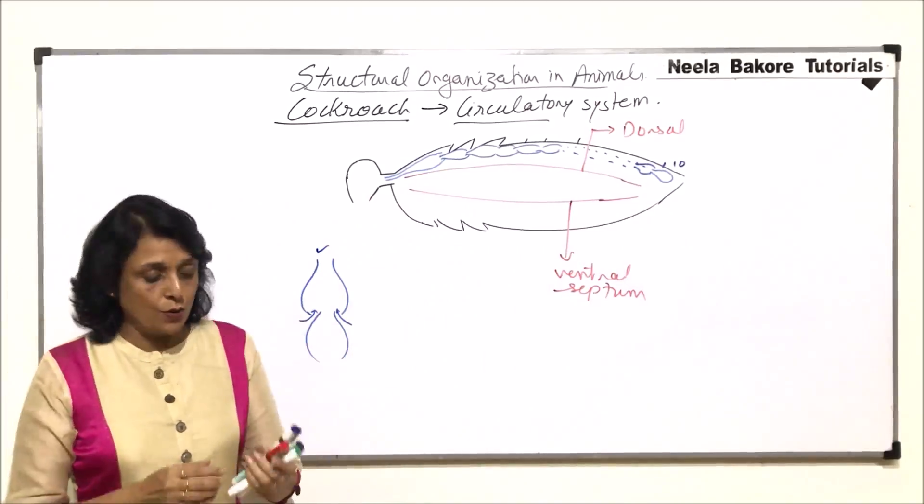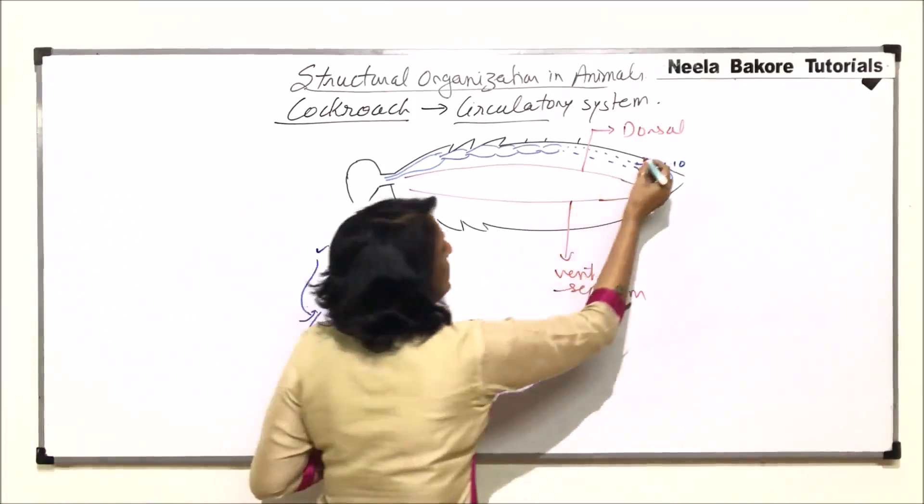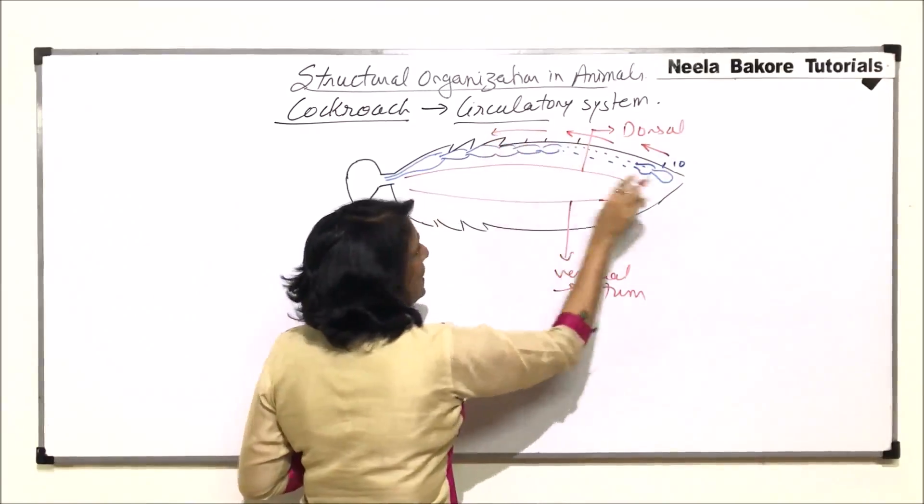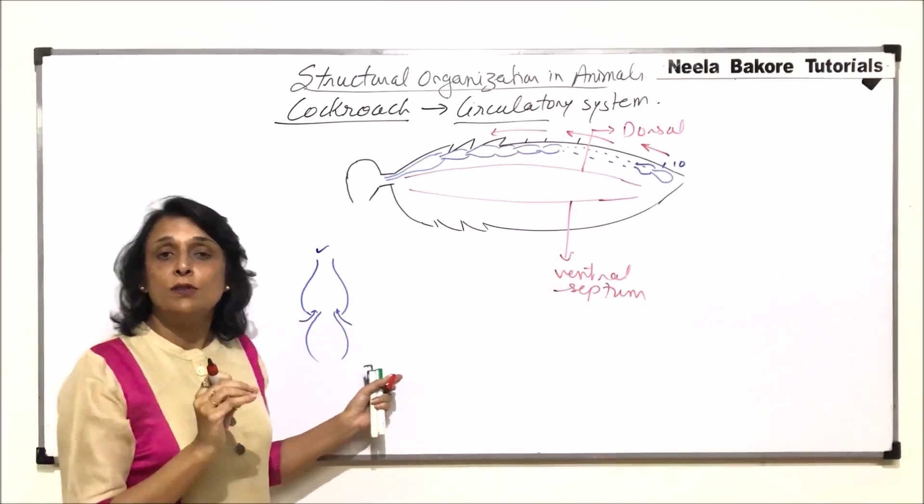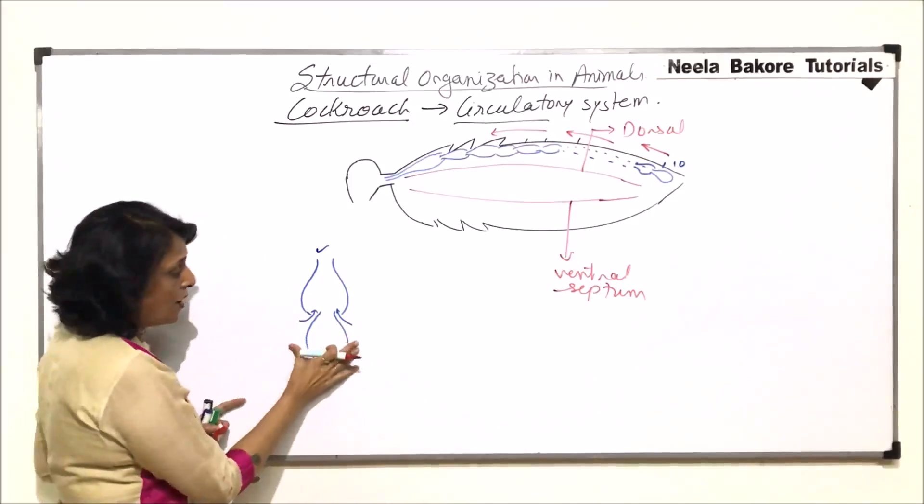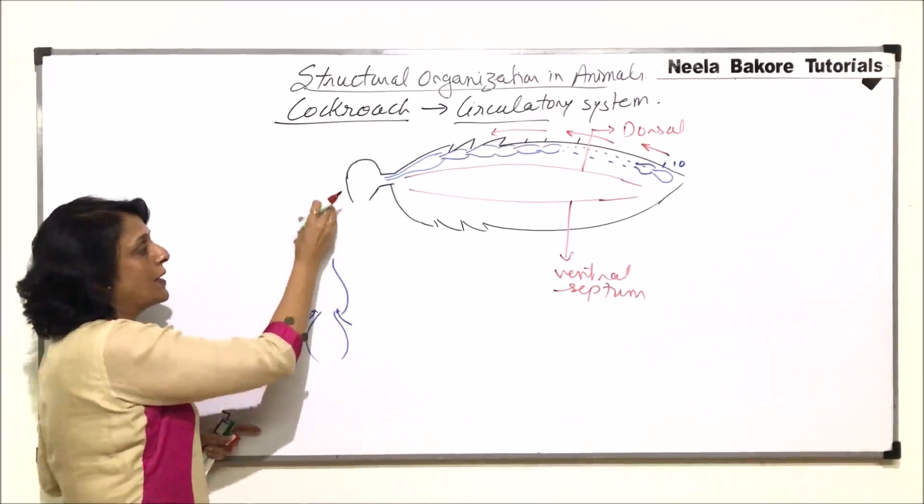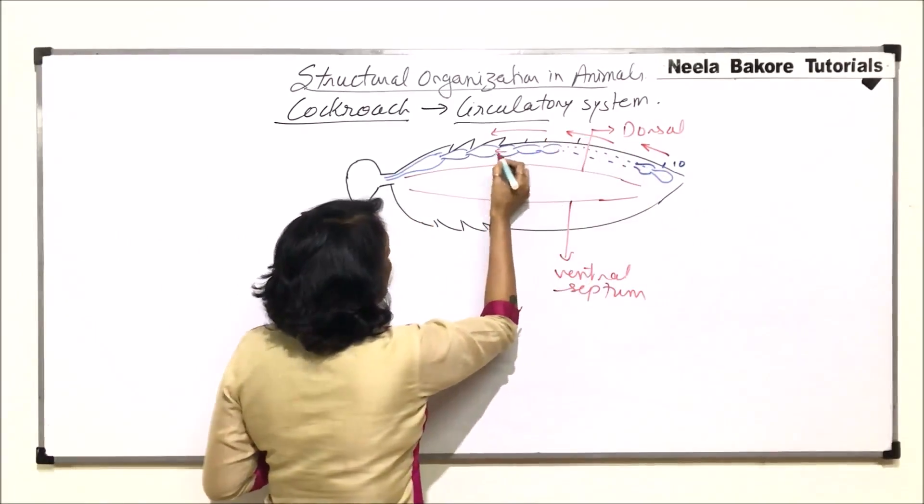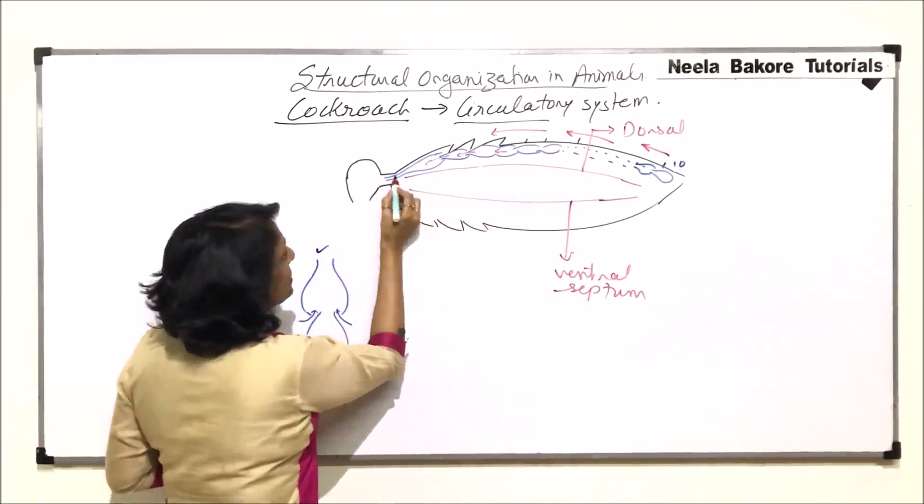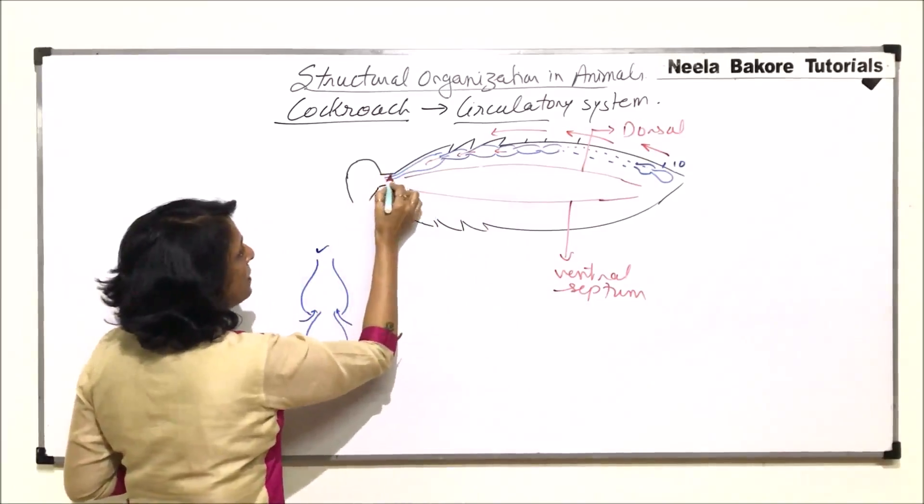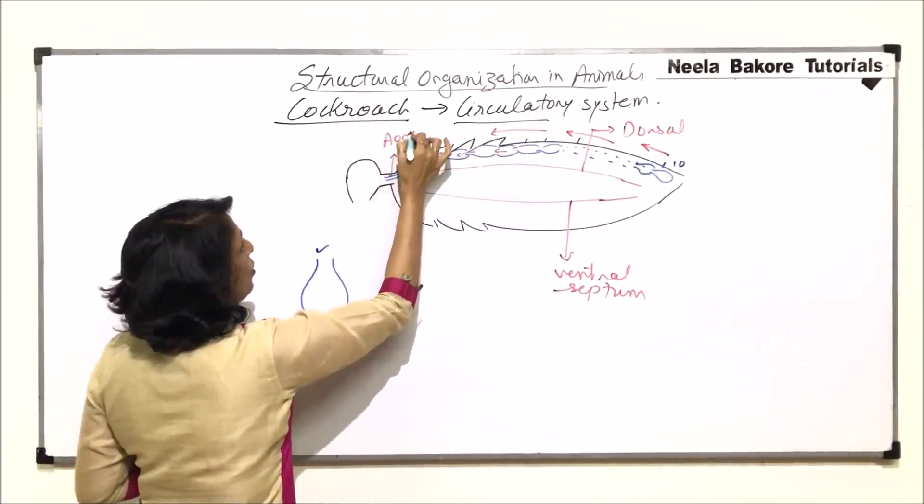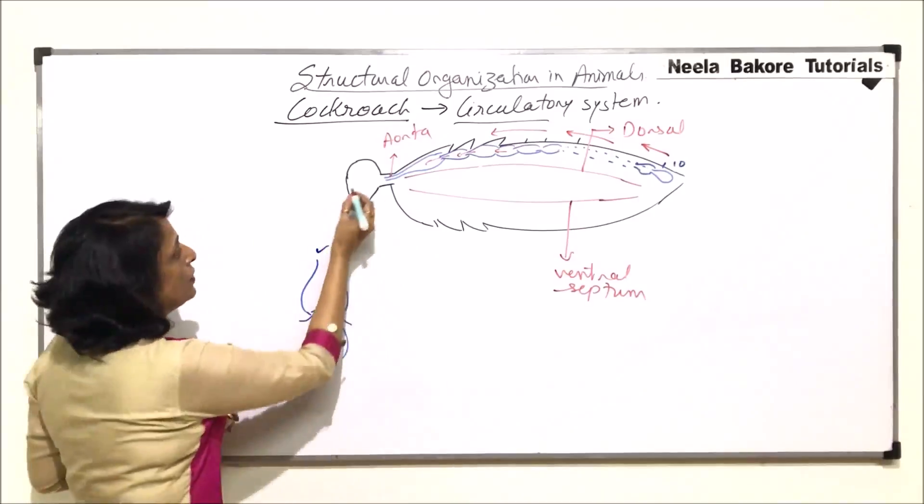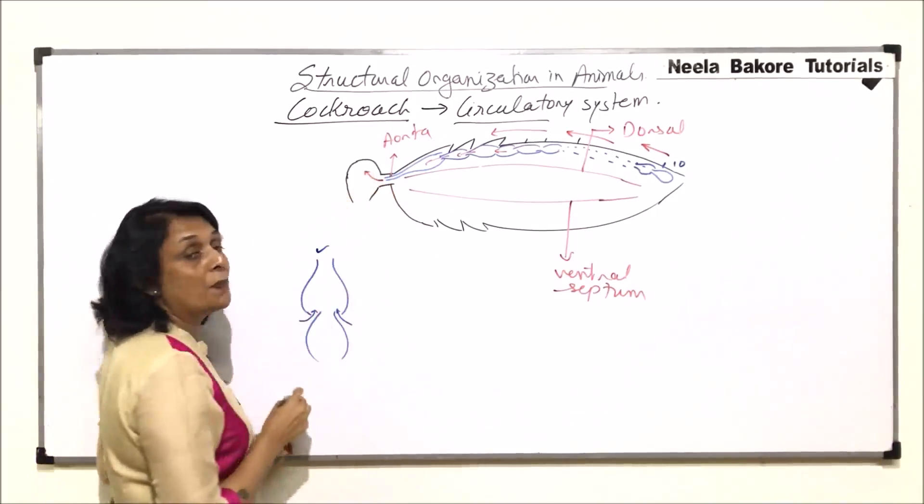Now how is the blood going to flow in this heart? The contraction is postero-anterior. That means first the posterior, the 10th chamber is going to contract. When this contracts, the blood will come into the 9th, when 9th contracts into 8th and so on. So the flow is in this direction. Now blood flows through this and there is a tubular part of the first chamber. This is compared with aorta. That is the main artery which is taking the blood. Now the blood is going to come into this part.